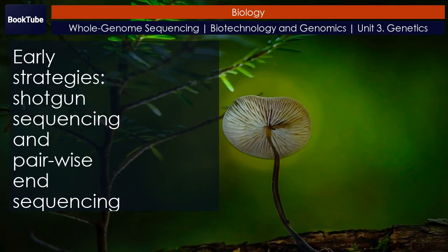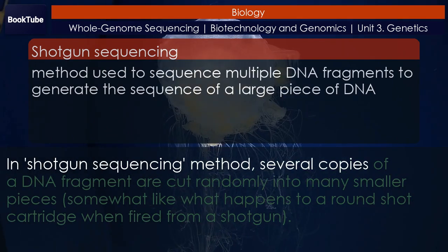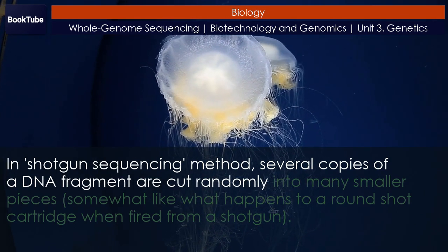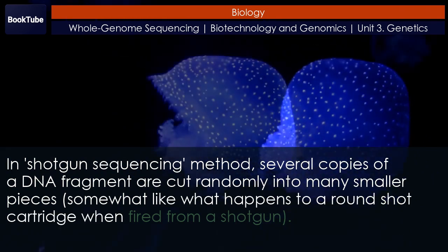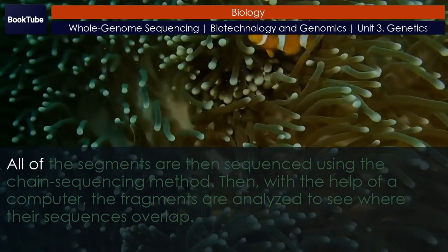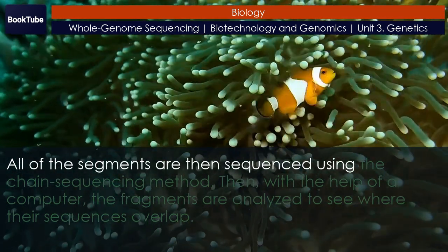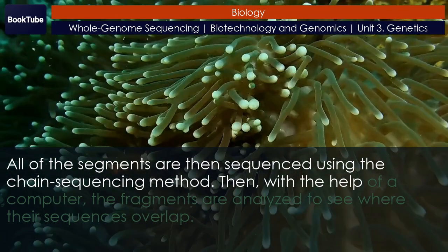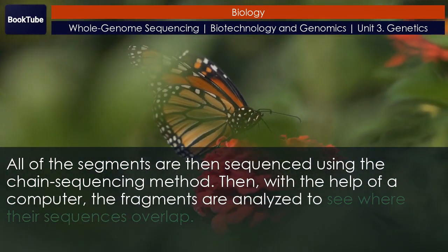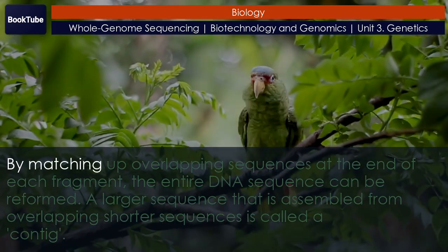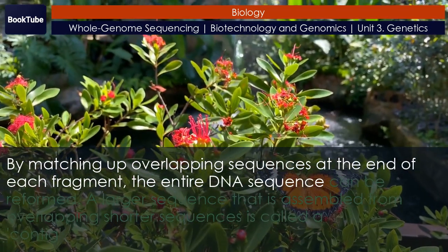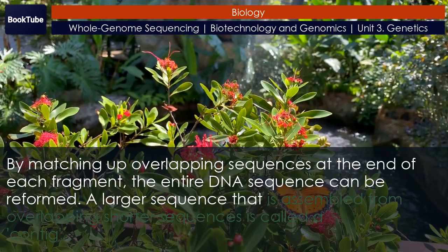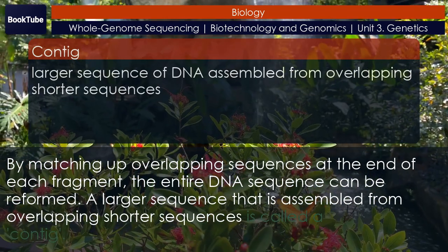Early Strategies: Shotgun Sequencing and Pairwise End Sequencing. In the shotgun sequencing method, several copies of a DNA fragment are cut randomly into many smaller pieces — somewhat like what happens to a round shot cartridge when fired from a shotgun. All of the segments are then sequenced using the chain termination method. Then, with the help of a computer, the fragments are analyzed to see where their sequences overlap. By matching up overlapping sequences at the end of each fragment, the entire DNA sequence can be reformed. A larger sequence assembled from overlapping shorter sequences is called a contig.